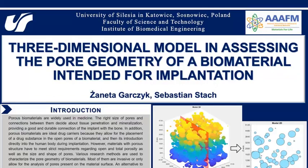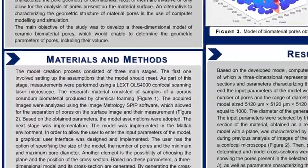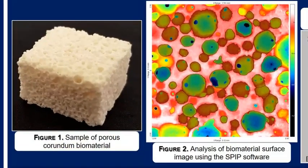The model creation process consisted of three main stages. The first step was to establish the assumptions of the model. As part of this stage, I performed measurements using a confocal scanning laser microscope. Samples of porous corundum biomaterial produced by chemical foaming constituted the research material. I then analyzed the images obtained with the microscope, which enabled the segmentation of pores and their measurement. Based on the obtained parameters, I adapted the assumptions of the model.